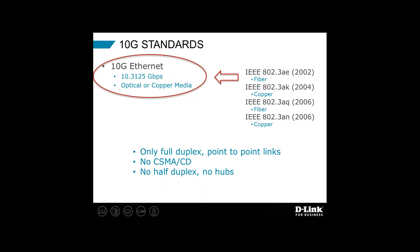When we talk about 10 gig Ethernet, the IEEE standard defines it as only full duplex point-to-point links. Back in the days of 10 meg and 100 meg Ethernet, you could have hubs with multiple devices on one LAN cable and sometimes collisions, handled by protocols like CSMA/CD — carrier sense multiple access collision detection. But with 10 gig Ethernet, no more half duplex, no more hubs. The standard specifies it must be full duplex point-to-point links.